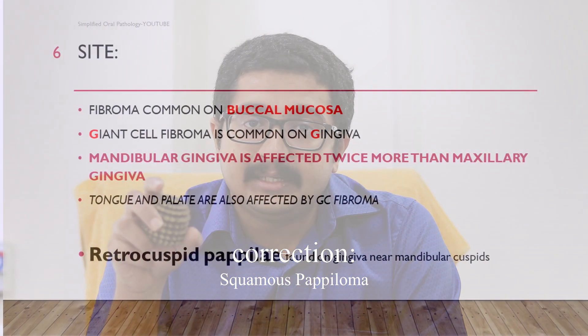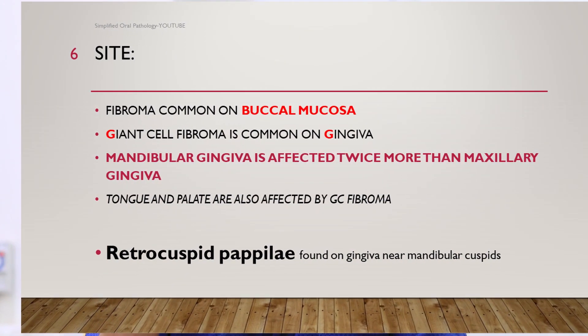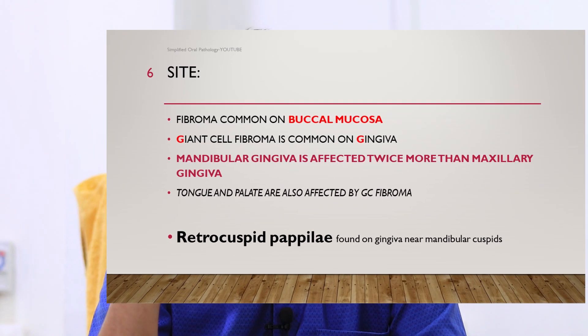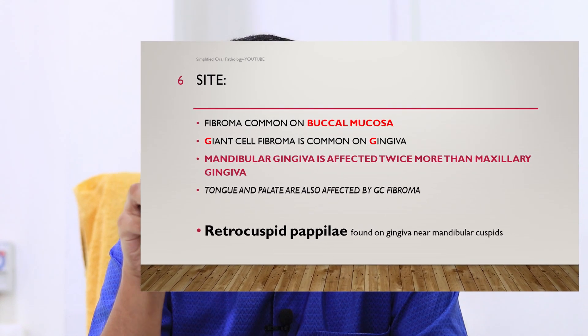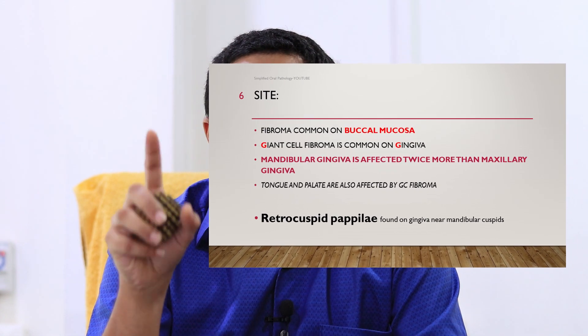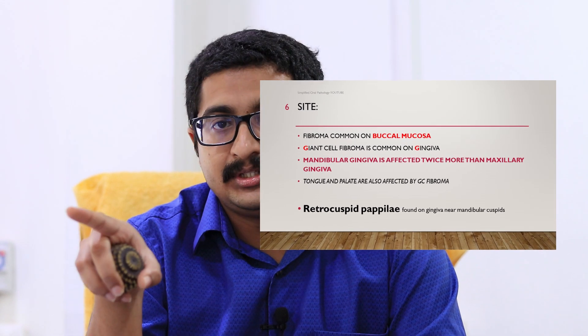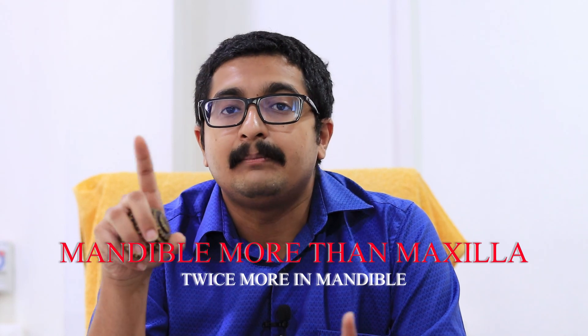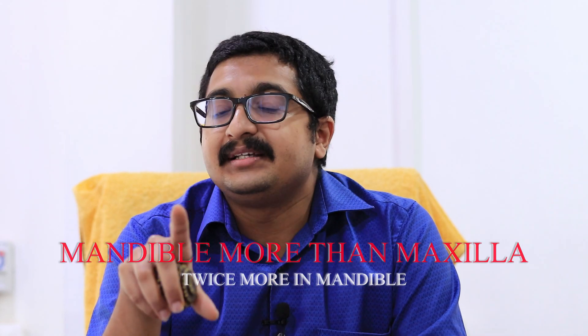Fibroma, because of its irritational nature, was most commonly found on the buccal mucosa. Giant cell fibroma, on the other hand, is predominantly found in the gingiva — specifically the mandibular gingiva. The mandibular gingiva is affected twice as much as the maxillary gingiva, which is an important point from an entrance exam perspective.